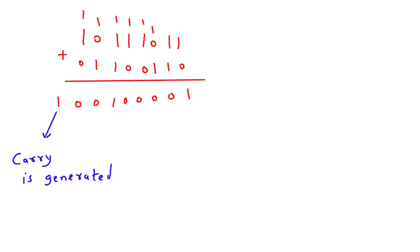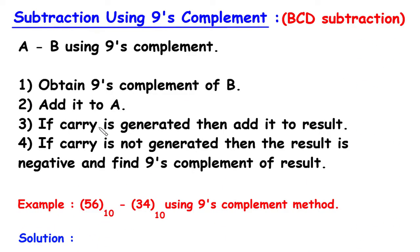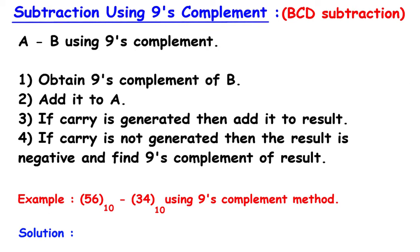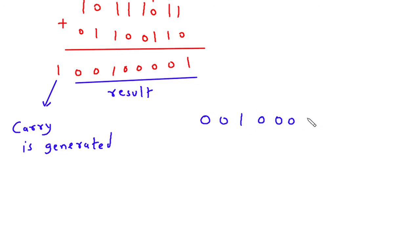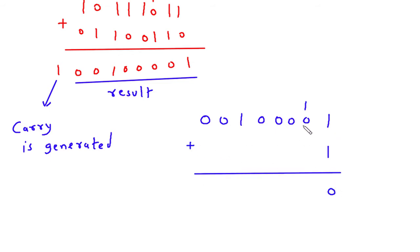When a carry is generated, we add it back to the result. So we take the result and add the carry to it: 1 plus 1 is 0 carry 1, and working through the bits gives us the final grouped result.